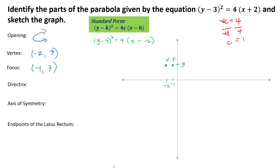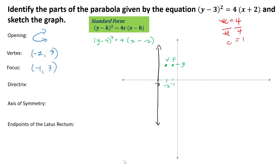The directrix is perpendicular to our x-axis for a parabola that is facing to the right. Since our focus is to the right of our vertex, the directrix would be 1 unit to the left of our vertex, at negative 3. It is a vertical line passing through negative 3, so the equation of the directrix is x equals negative 3.